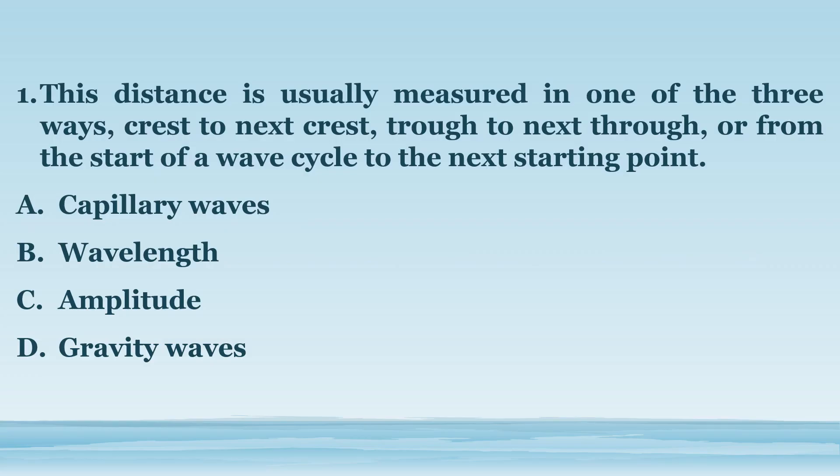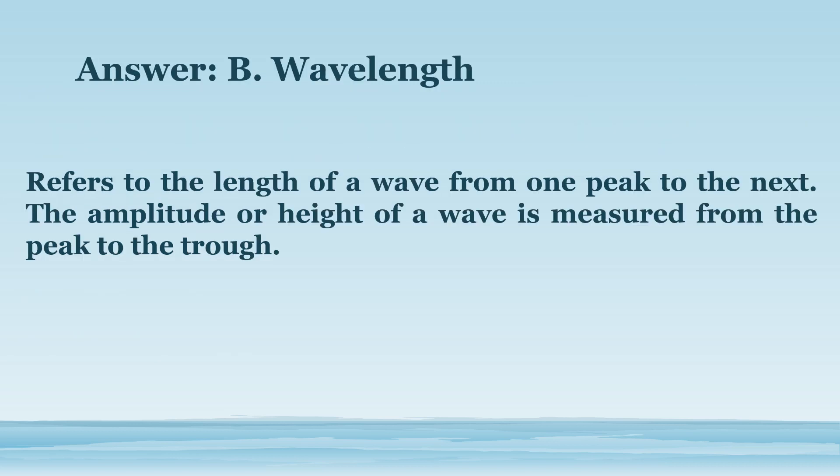Number 1. This distance is usually measured in one of three ways: crest to next crest, trough to next trough, or from the start of a wave cycle to the next starting point. A. Capillary Waves. B. Wavelength. C. Amplitude. D. Gravity Waves. The answer is letter B. Wavelength. This refers to the length of a wave from one peak to the next.